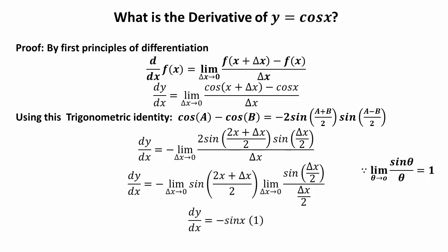Applying the limit: Δx → 0 gives -sin[(2x + 0)/2] = -sin(x). The next term, limit as Δx→0 of sin(Δx/2) over (Δx/2), is equal to 1. So dy/dx = -sin(x). The derivative of cos(x) is equal to -sin(x).